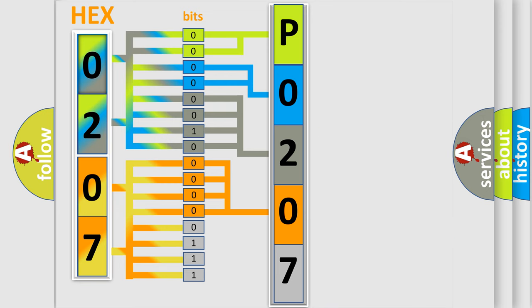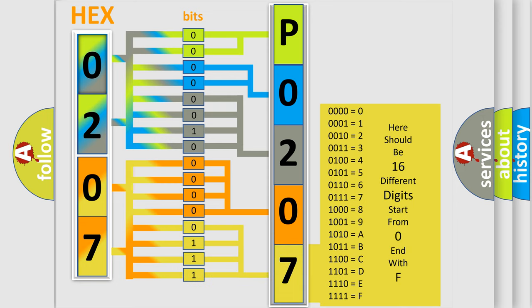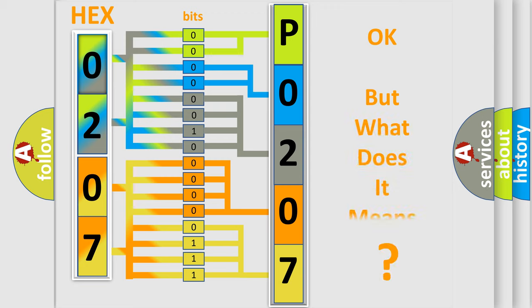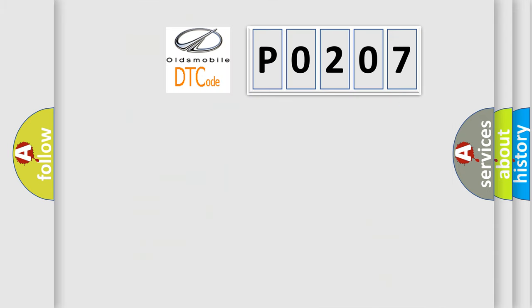A single byte conceals 256 possible combinations. We now know in what way the diagnostic tool translates the received information into a more comprehensible format. The number itself does not make sense to us if we cannot assign information about what it actually expresses. So, what does the Diagnostic Trouble Code P0207 interpret specifically for Oldsmobile car manufacturers?